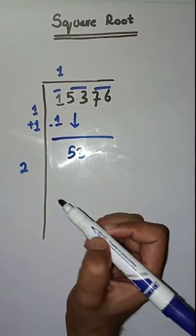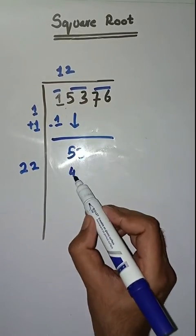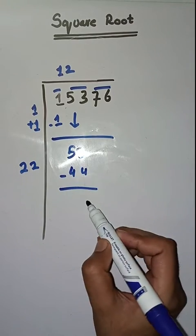Now we will take number 2. 22 times 2 is 44. We subtract and get 9 (13 minus 4 is equal to 9). Next pair is 76, we bring it down.